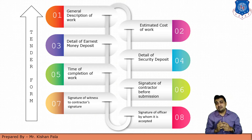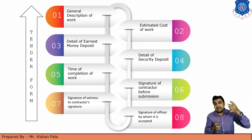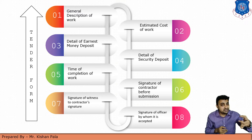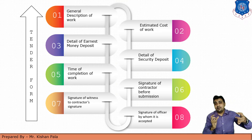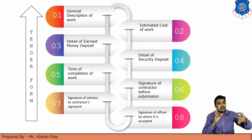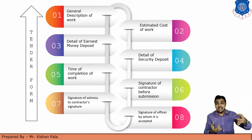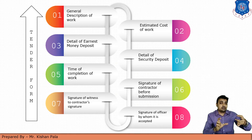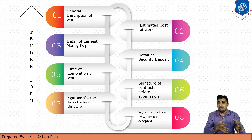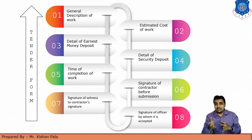Now let us discuss about the tender form. The tender form should contain the general description of the work, the type of the work, the location of the work, and other important data regarding the construction work. The next item is the estimated cost of work — after finding the quantity of all activities, we can easily find out the total cost of the work with the rate of each particular item.